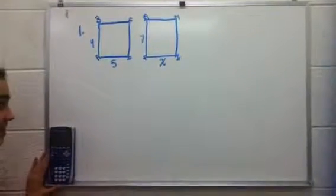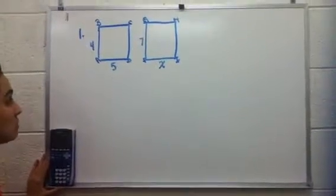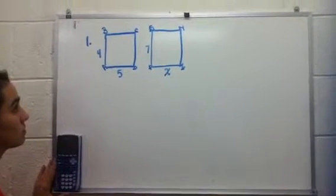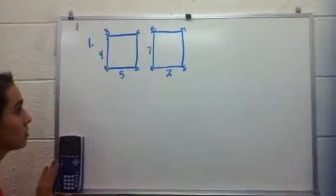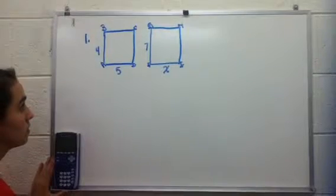On Batman's head, two rectangles are formed. Rectangle ABCD and rectangle FGHI are similar. Find the unknown.